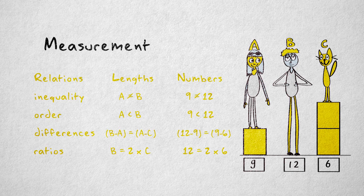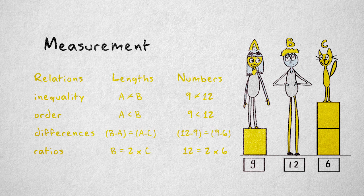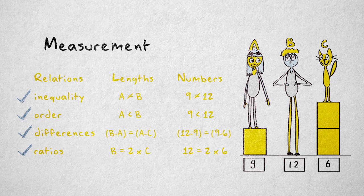We can use the numerical relations of numbers to represent all these relations. For body length, all four possible relations—inequality, order, differences, and ratios—can be meaningfully interpreted.